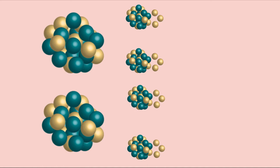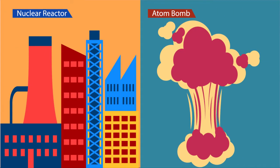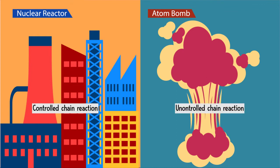In the chain reaction, if the number of neutrons produced is kept constant, then it is called a controlled chain reaction. If it is not controlled, the chain reaction enhances the number of neutrons and leads to explosion. In nuclear reactors the chain reaction is controlled, whereas in nuclear bombs or atom bombs it is uncontrolled.